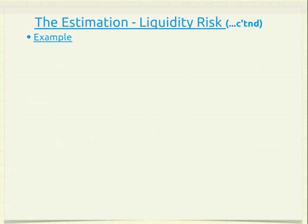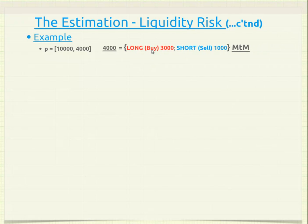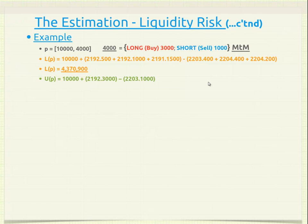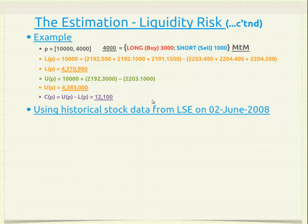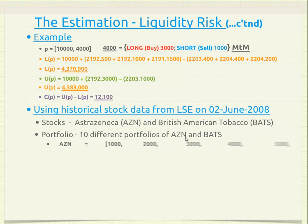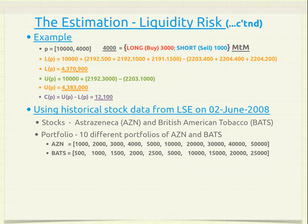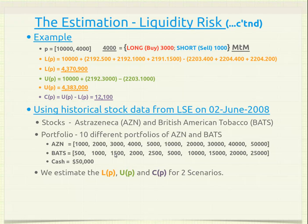For the liquidity risk estimation, we look at an example with a portfolio of 1,000 worth of cash and 4,000 worth of stock — marking 3,000 worth of stock to a buying position and 1,000 worth to a selling position. Using historical data from the London Stock Exchange dated 2 June 2008, we use two stocks — AZN and BATS — across ten different portfolios. The cash considered is $50,000. We estimate L, U, and C for two scenarios.